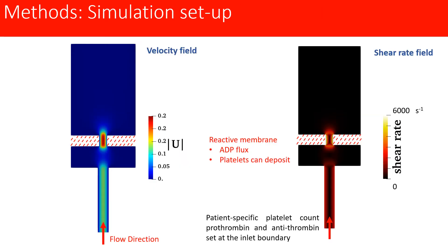An axisymmetric simulation was performed. Here we observe the mid-plane velocity and shear rate fields. We can observe that in the orifice we have both the highest velocity and shear rates, and in this region vWF will be able to unfold and therefore clot growth will be promoted.